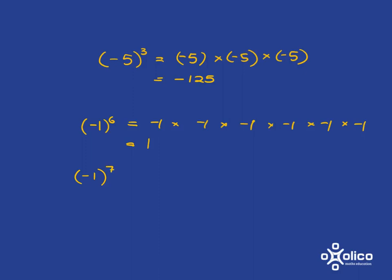Can you tell me what you think is going to happen with negative one to the power of seven? Pause the video and think about it. Did you get negative one? You have the same situation as before, with just one more multiplication by negative one. The pairs all end up as positive one, and then you multiply by a negative one, giving negative one. So for negative one to the power of 90 — even power — you get positive one. For negative one to the power of 103 — odd power — you get pairs plus one extra negative one, so it's negative one.